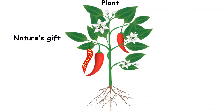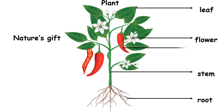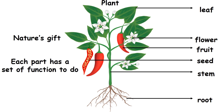The basic parts of a plant are root, stem, leaf, flower, fruit and seed. Each part has a set of functions to do.